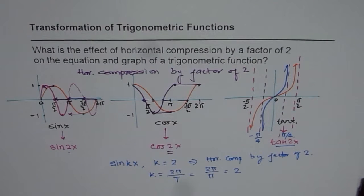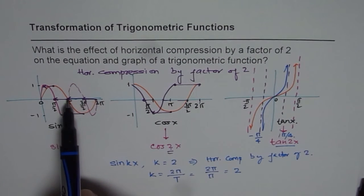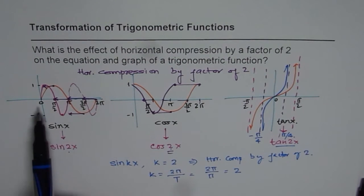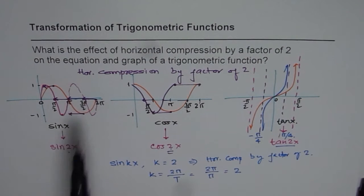I hope with this you clearly understand the effect of horizontal compression by a factor of 2. So the equation changes, the k value becomes 2 for you, time period of the wave becomes half. And in 2 pi, we will have 2 waves. I hope that makes things very clear. Thank you and all the best.